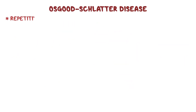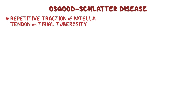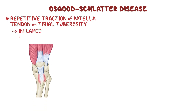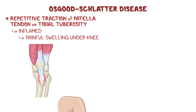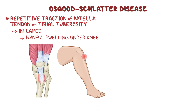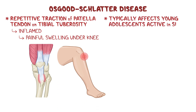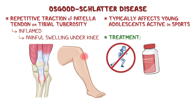Osgood-Schlatter disease results from repetitive traction of the patellar tendon on the tibial tuberosity, causing it to become inflamed, which results in a painful swelling just under the knee. This disease typically affects young adolescents who are active in sports, and its treatment consists of reducing physical activity, non-opiate pain management, and waiting for it to heal as the child grows up.